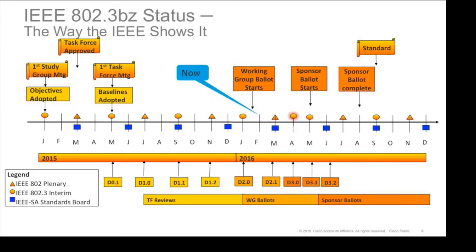On status: the 802.3bz process started around November 2014 with a call for interest. We had our first study group meeting and approved objectives in January 2015, adopted technical baselines shortly after, and have now completed a full document entering a wider ballot. All things being equal, the standard will be done by September 2016 — less than two years from start to finish. We expect it will be a software upgrade for anyone shipping NBase-T today to the final standard, so you can adopt with confidence, without risk.